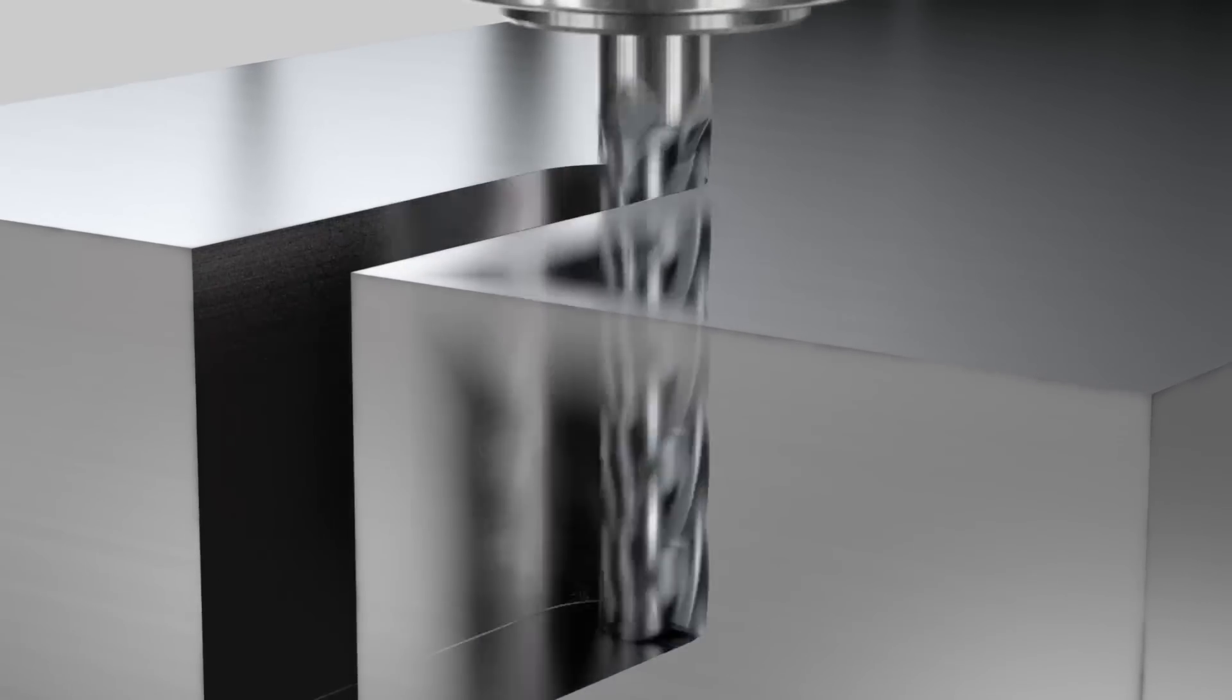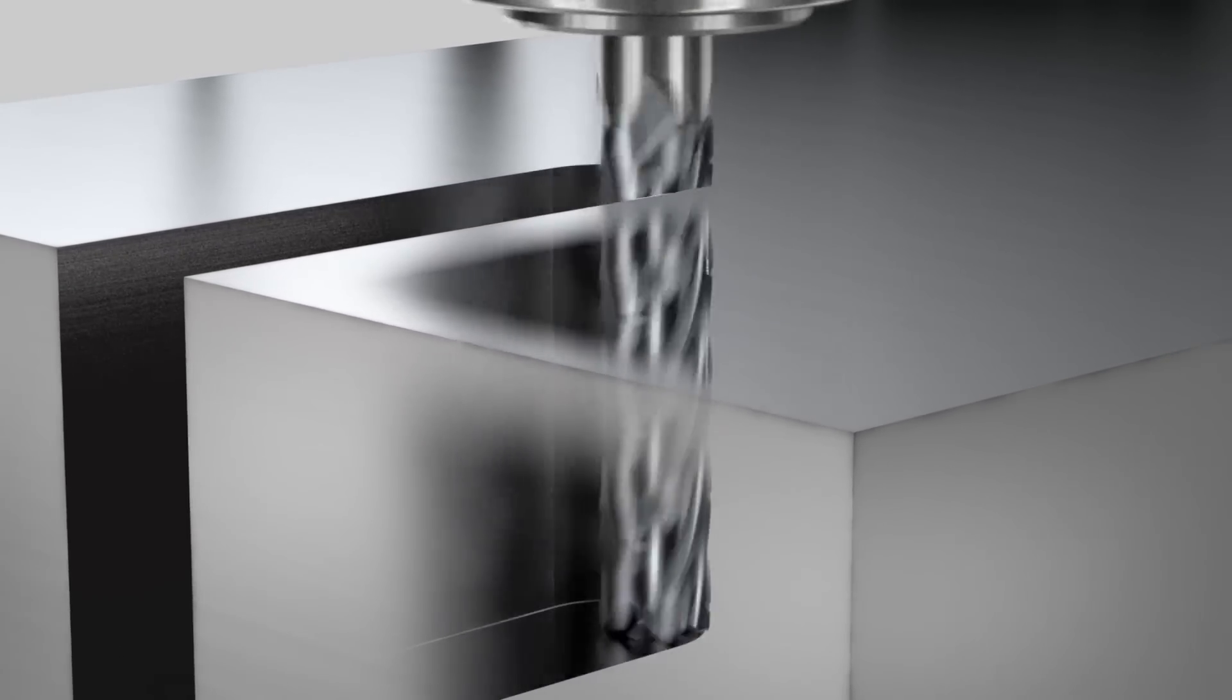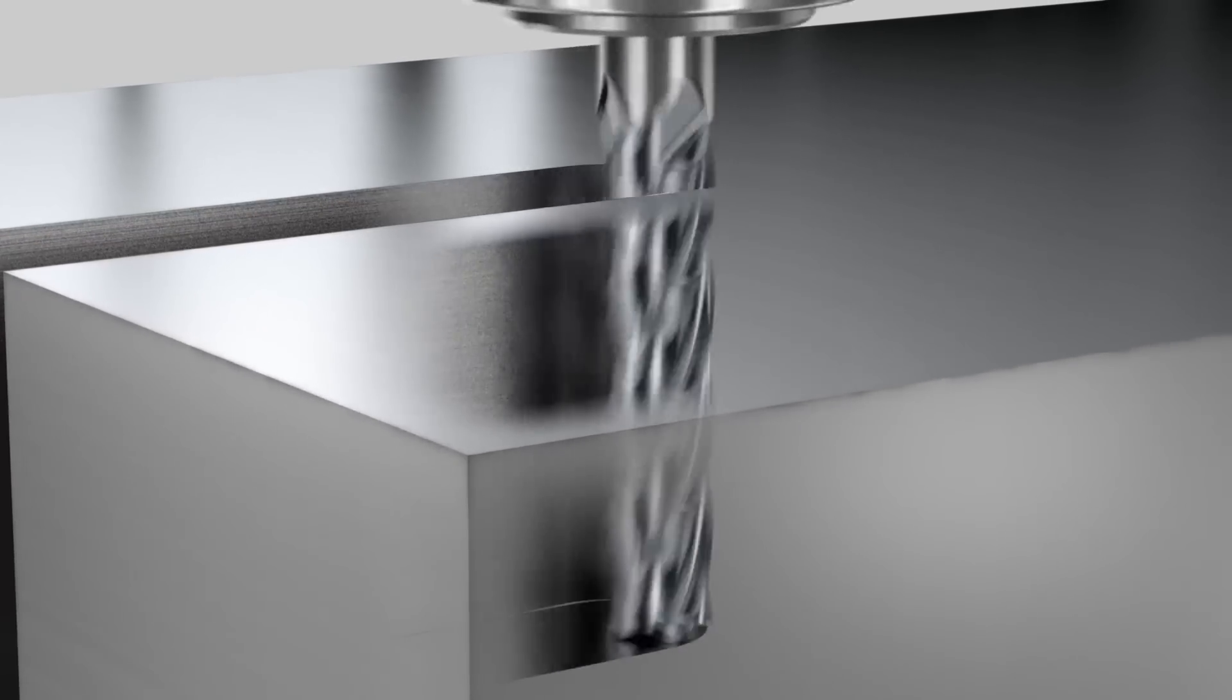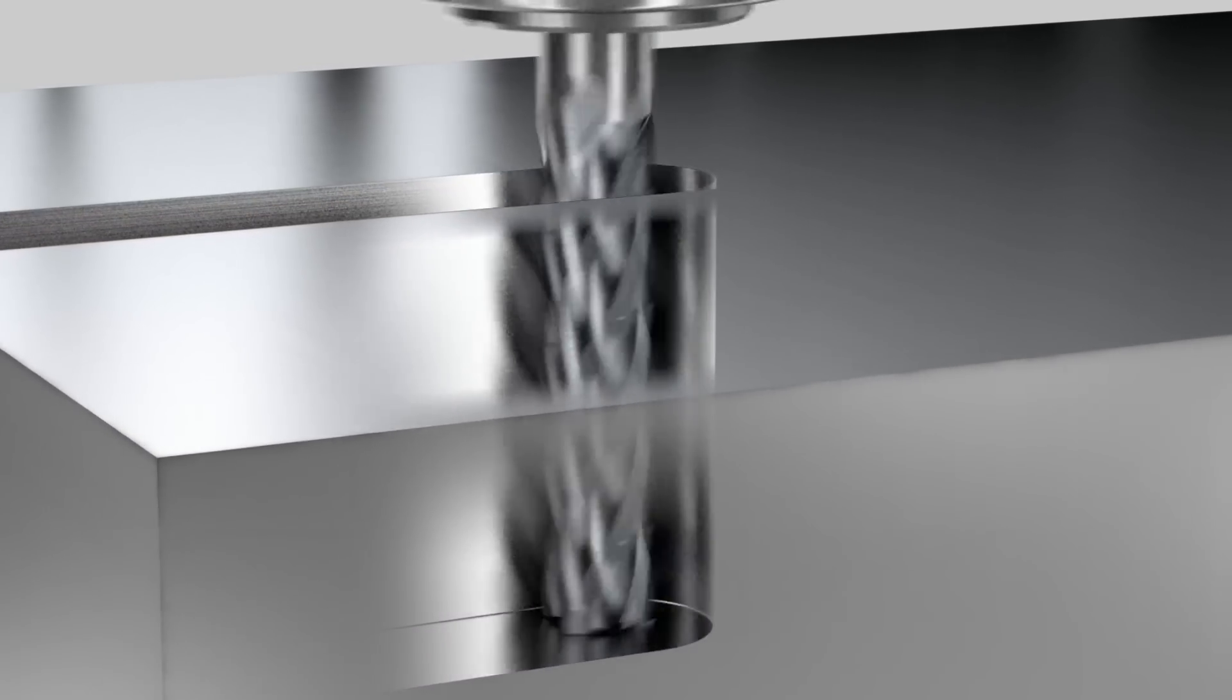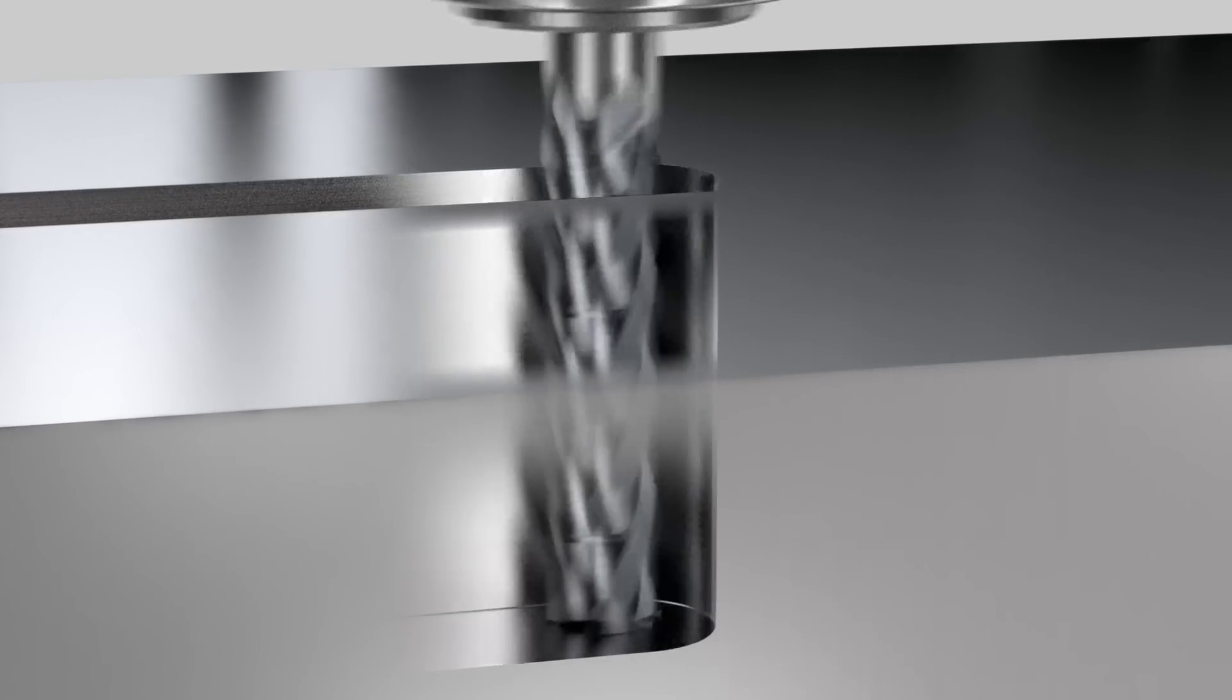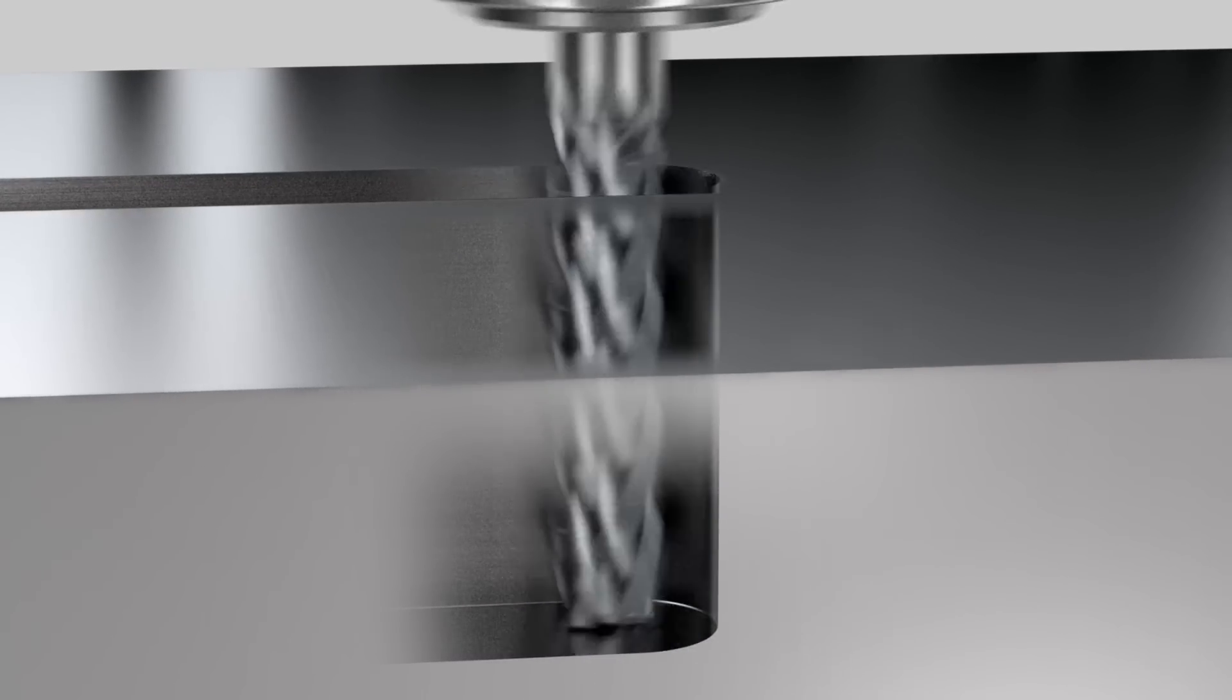As the high feed side milling method allows for the use of the complete cutting length of the end mill, a higher metal removal rate can be achieved with smaller diameters as compared to conventional milling strategies. This reduces tool costs, at the same time improves overall productivity, especially when using small machines.